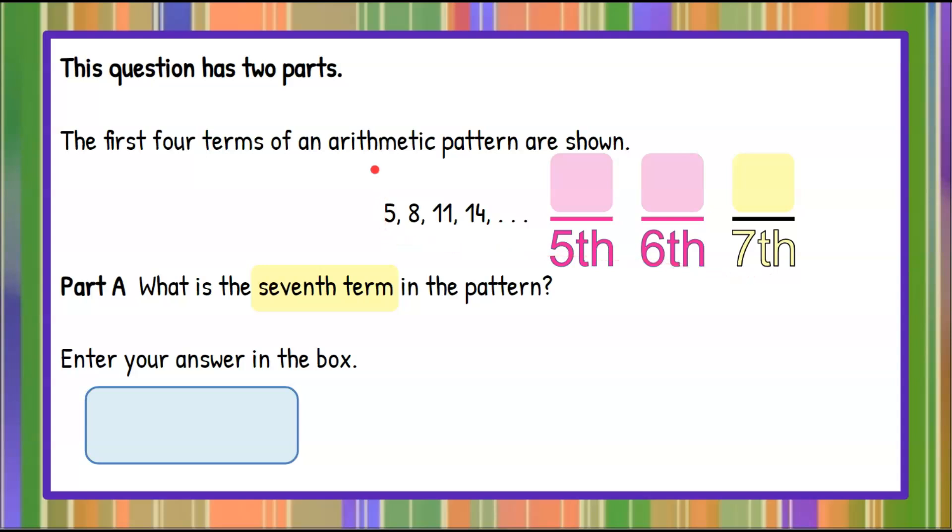Here we want to look at this pattern and understand that if it's an arithmetic pattern, that means I'm going to repeatedly add the same number to each term to get to the next term. So from 5 to 8 I can see that increased by 3.